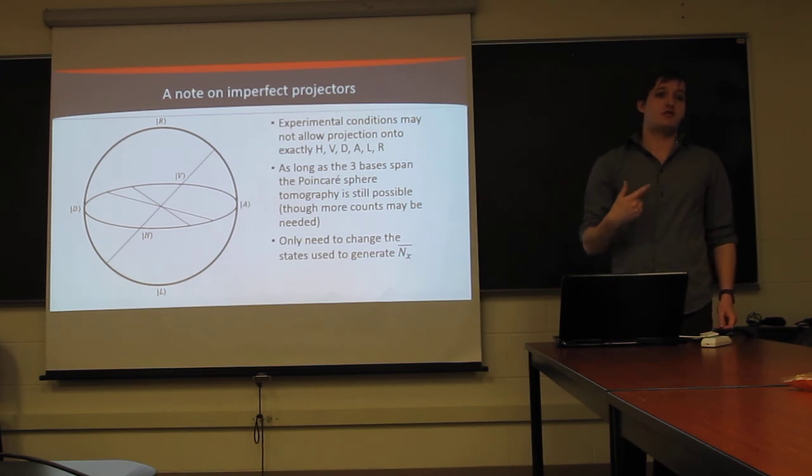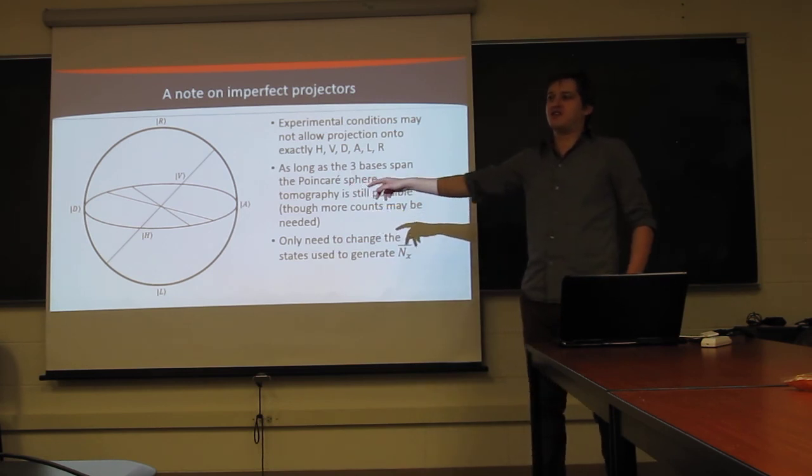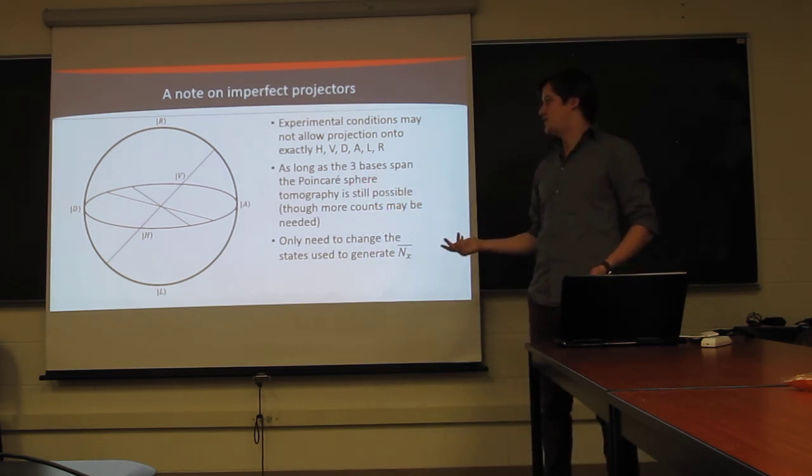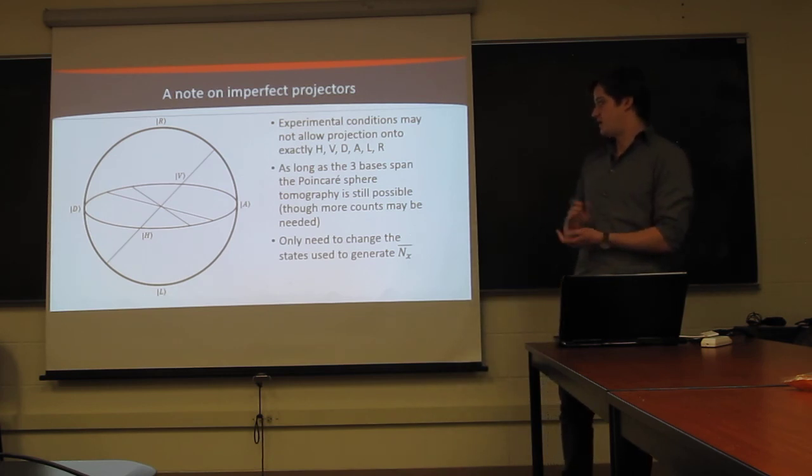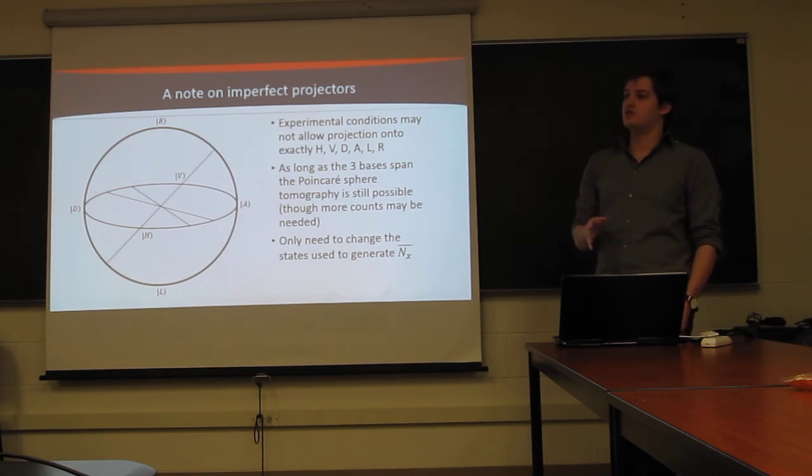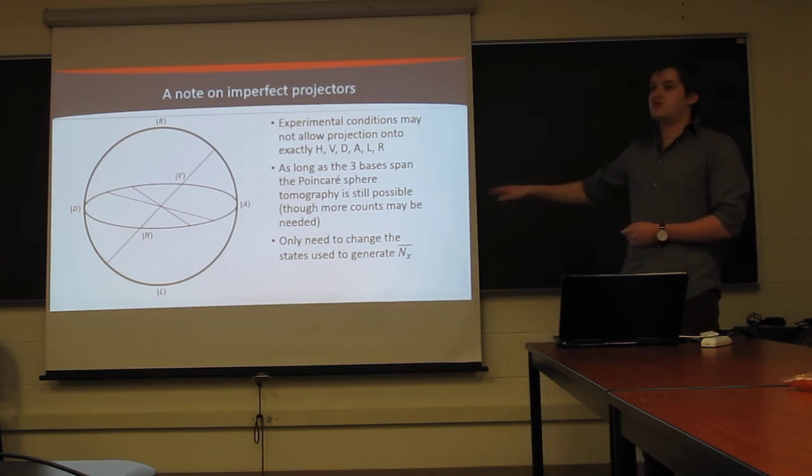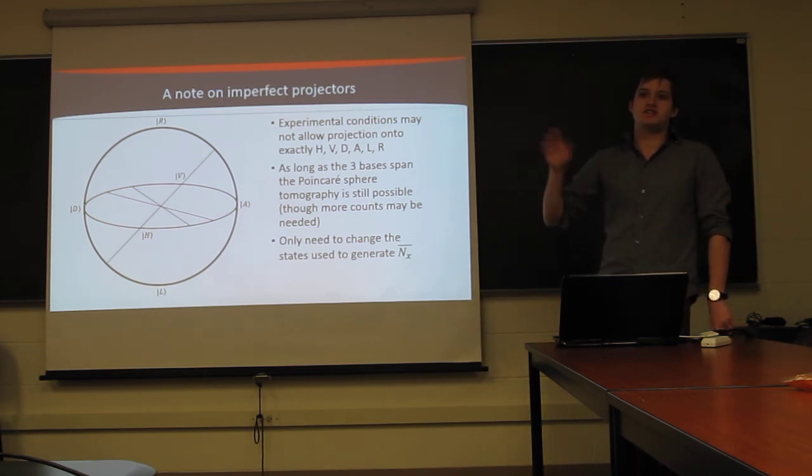Now, you may need to run the tomography for longer, simply because if you have these axes I've depicted here, two of them are giving you basically the same information all of the time, just with a little bit of difference, and so you're going to need more and more counts to actually get the same amount of information as you would have gotten just using our standard bases. In terms of how that actually affects the tomography, it's relatively simple. All you have to do is, when you're projecting your test state onto the different measurements, all you do is change those projections to be the states that you actually have available to you, such that the states you measured match the states that you tuned to.